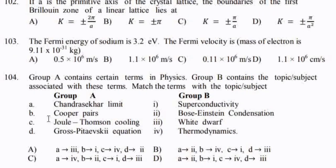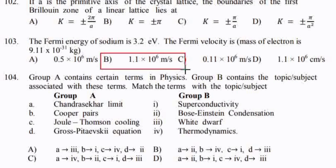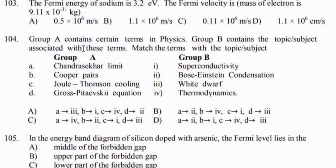The Fermi energy of sodium is 3.2 electron volts. The Fermi velocity is — this is a previous question from the metaphysics paper. After working it out, the answer is option B.